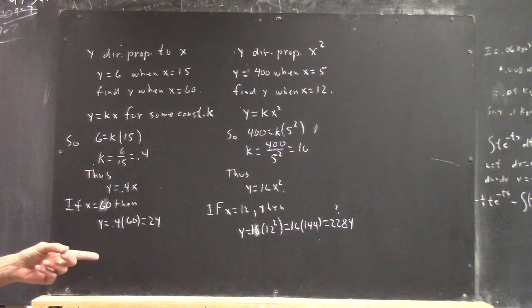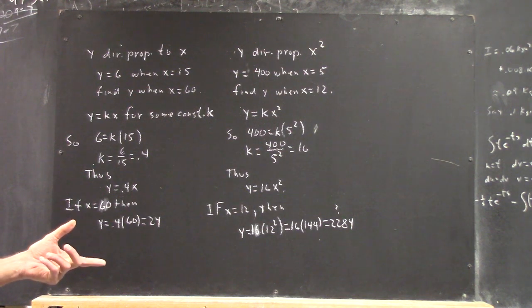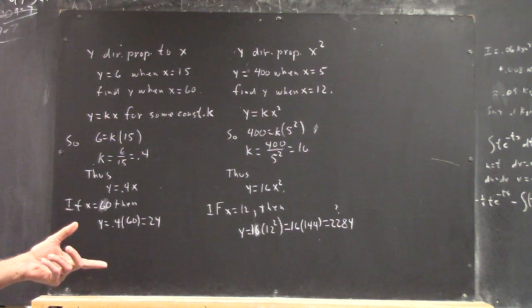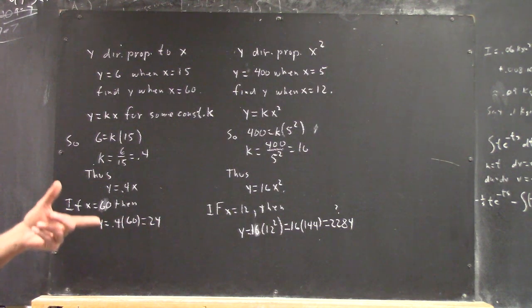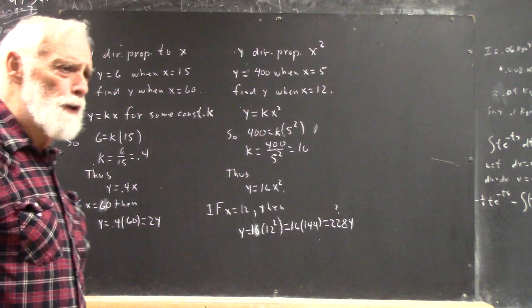So, how did I get 2284? 40 times 16 is 640. 640 added to 1600 is 2260. 2260. 2240.